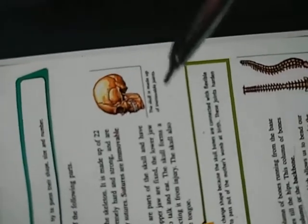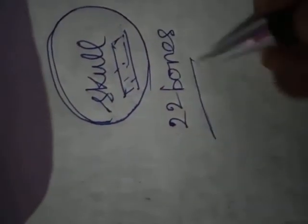Students, among the human skeleton system, today I am going to discuss about the skull. The skull is the topmost portion of the human skeleton. Our brain is protected through this skull. This is the diagram of an entire skull, and it is made up of 22 bones. These bones are very strong and hard.